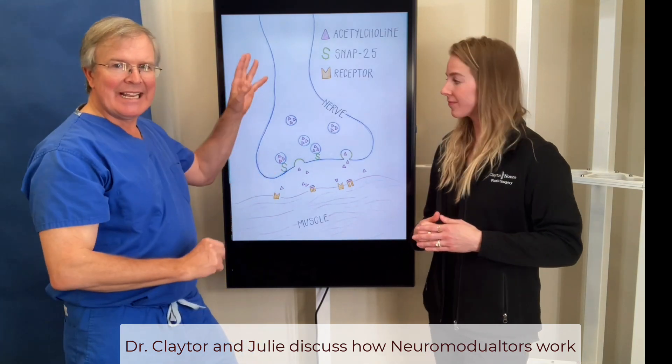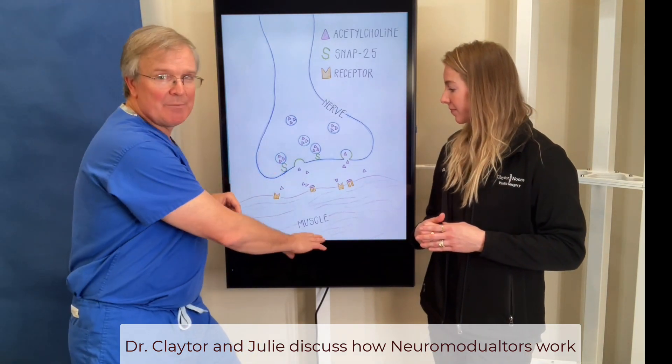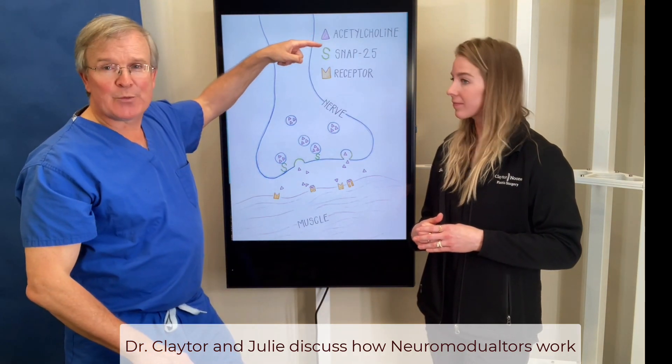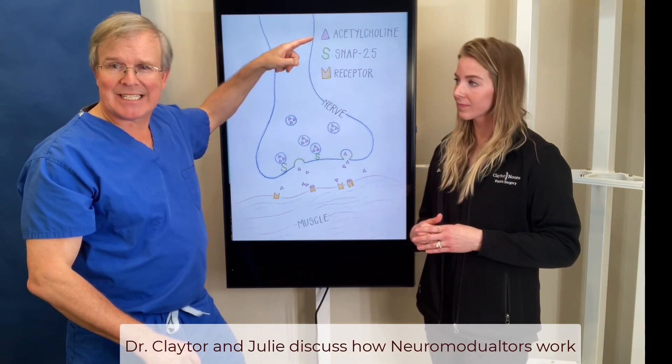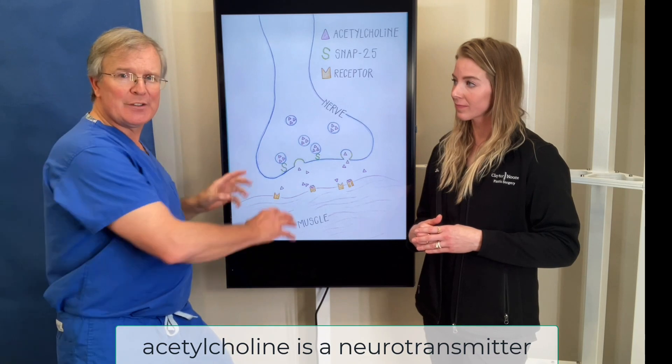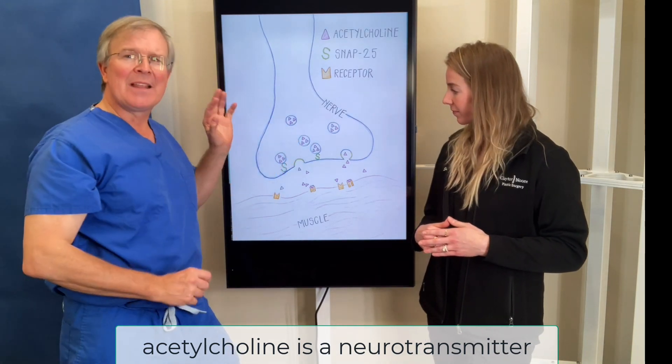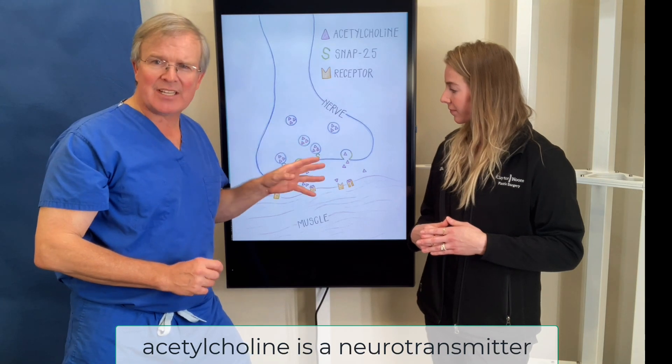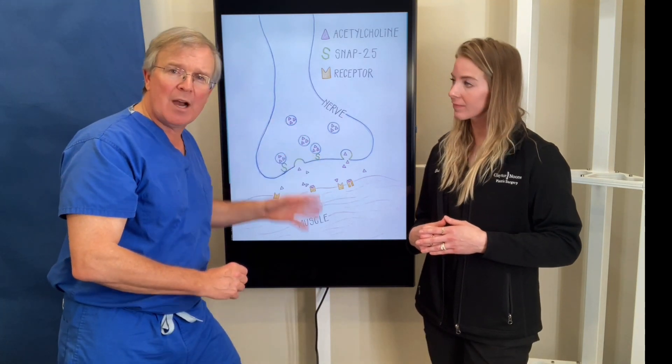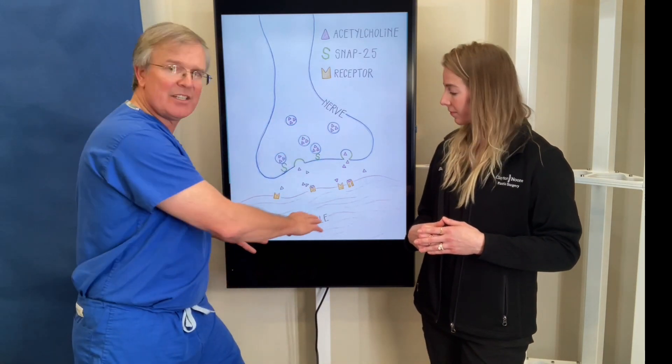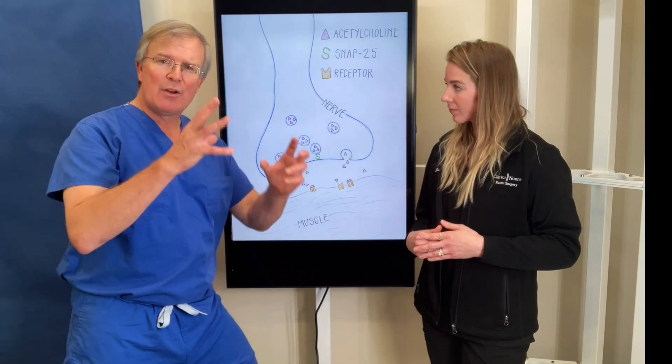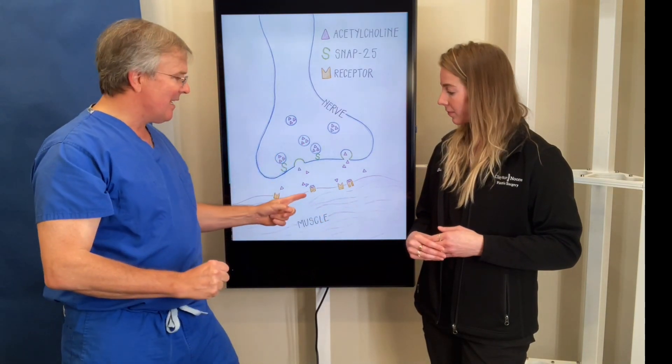Here's a nerve and here is the muscle. The nerves work by releasing something called acetylcholine. Those are neurotransmitters and they live in little vesicles or pockets within the nerve. They must be released from the nerve and come across this transition to the muscle for the muscle to contract.